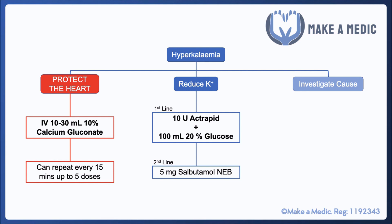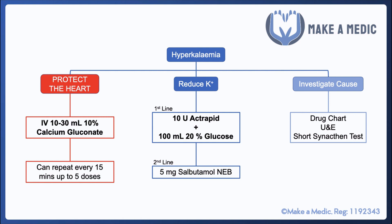It's also important to investigate for the cause. The drug chart is a very important thing to check, as various medications can have a profound impact on serum potassium concentrations. Urea and electrolytes should be checked to assess renal function, and for suspected adrenal insufficiency a short Synacthen test would be useful, as it tests the ability of the adrenals to respond to stimulation.